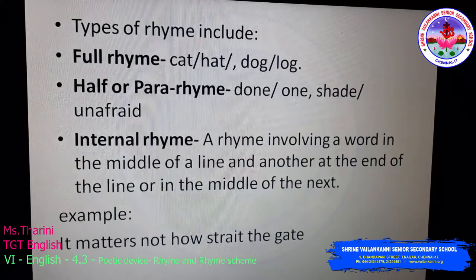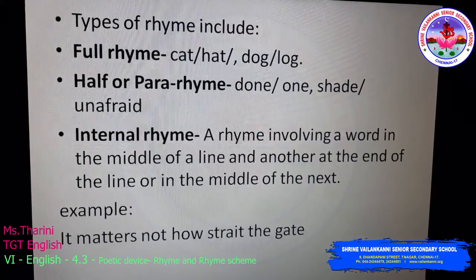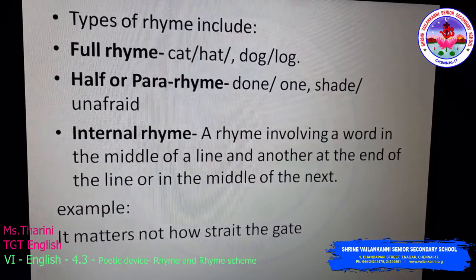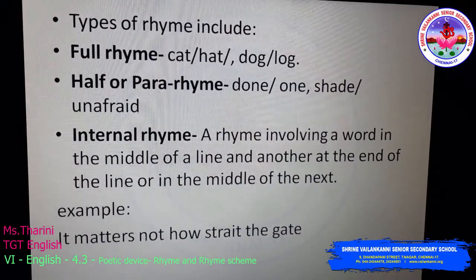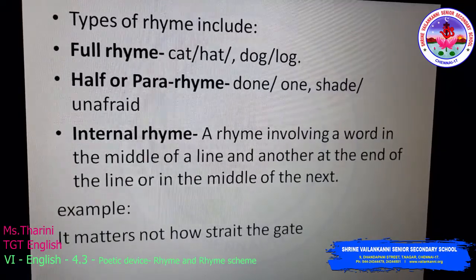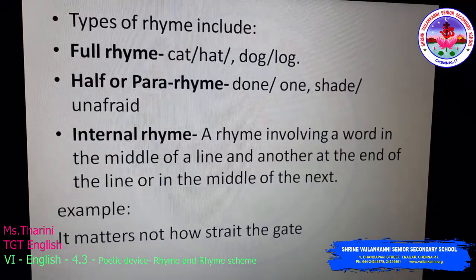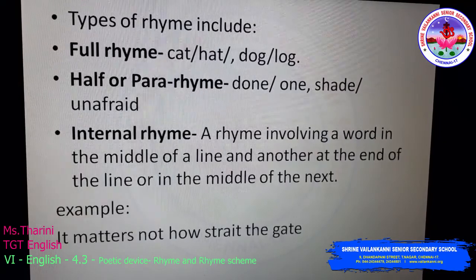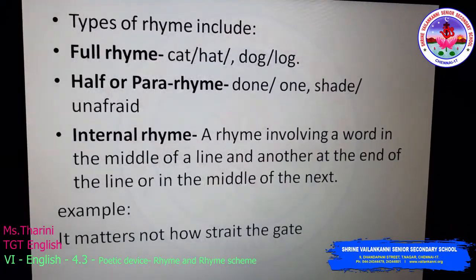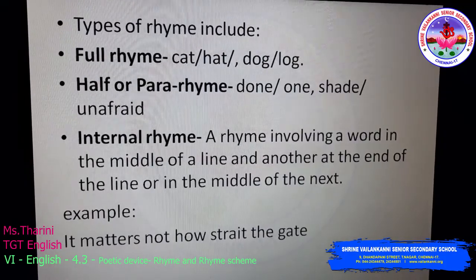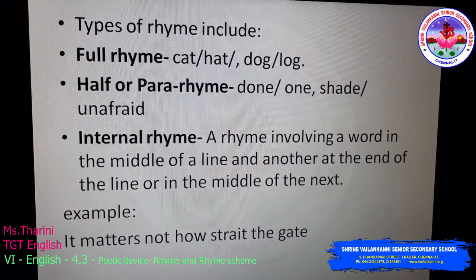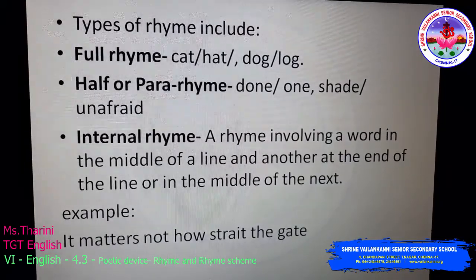For example: 'It matters not how straight the gate.' Here, 'straight' is a word in the middle of the line, and 'gate' is at the end of the line. So 'straight' and 'gate' is not a full rhyme but it is a para rhyme — that's an example of internal rhyme.